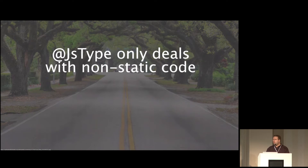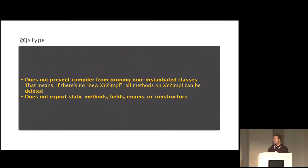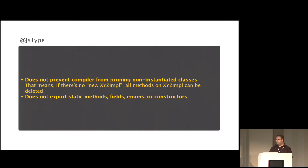@JSType only deals with non-static, virtual methods. It doesn't deal with static fields, static methods, constructors, and things like that. It also doesn't prevent the compiler from pruning anything. Just because you put @JSType on a class doesn't mean a JavaScript programmer can refer to that object — the compiler will still prune it as dead code unless it sees a new statement that instantiates an implementation somewhere. The @JSType tells the compiler not to rename the methods, but not to delete them — it still has to see the object instantiated and passed into JavaScript somewhere.